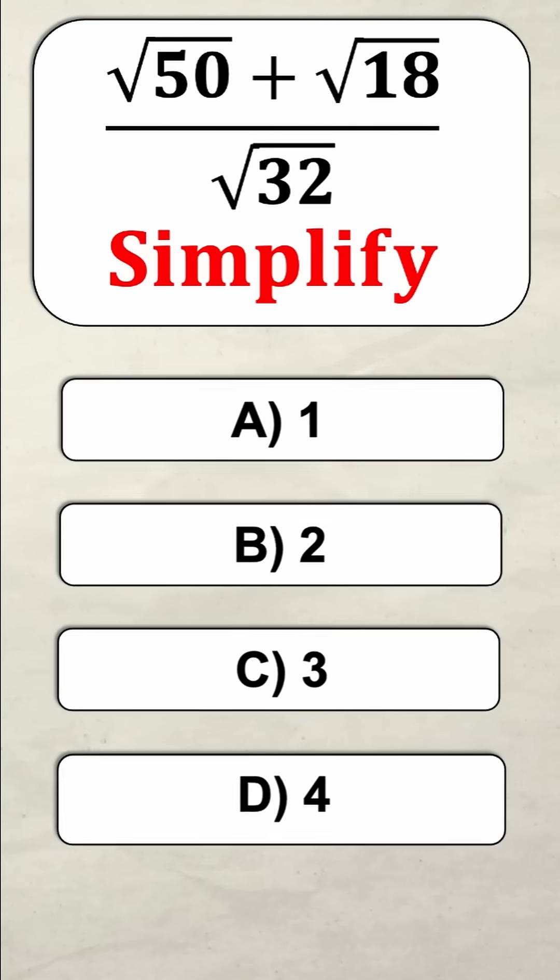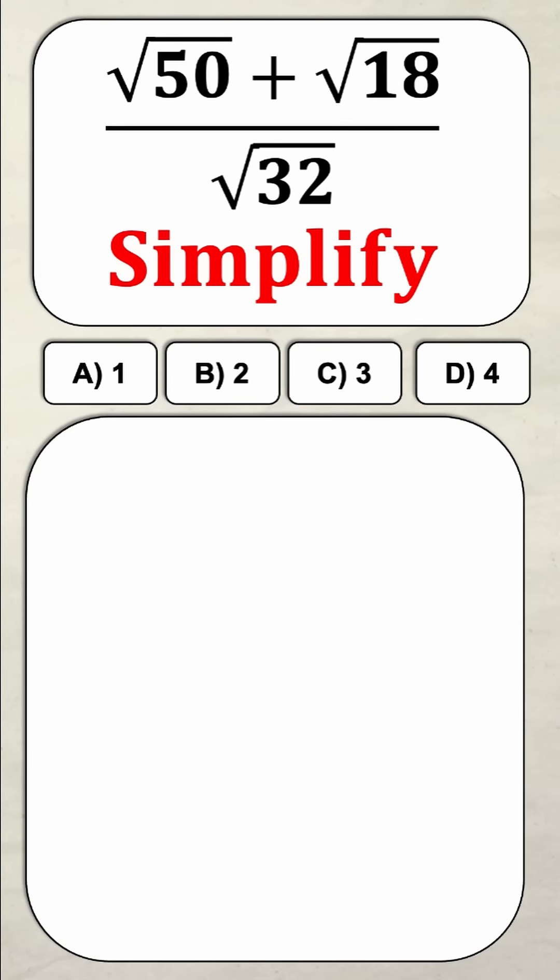Can you simplify this expression? Let's learn how to solve it together. So here you can see that we have the square root of 50 plus the square root of 18 all divided by the square root of 32.